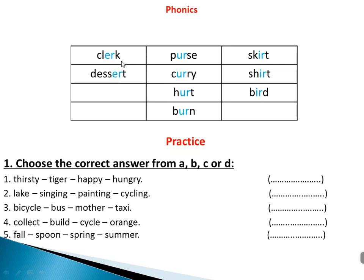Desert — d-e-s-e-r-t — desert. Pierce — p-i-e-r-c-e — pierce, meaning a bag or chickpeas carrier. Carry — as in curry, the Indian spice. Hurt — h-u-r-t — hurt, meaning to cause pain. Burn — b-u-r-n — burn, meaning to set on fire.